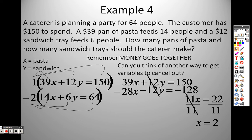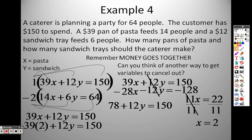To plug it back in, I pick whichever one I want. And I pick the top one. So I'm plugging a 2 in for x. 39 times 2 is 78. So to get y by itself, since it's a positive 78, I would subtract 78 on both sides. I get 12y equals 72. Divide both sides by 12, because I'm trying to get y by itself. And I end up with y equals 6. So what this means is I could get 2 pans of pasta and 6 sandwich trays, and that should be enough to feed all 64 people.